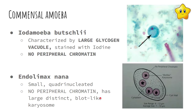Another commensal amoeba is Iodamoeba butschlii. It is characterized by a large glycogen vacuole, as shown by the arrow in the illustration. This glycogen vacuole can be stained with iodine. Please take note that Iodamoeba has no peripheral chromatin.